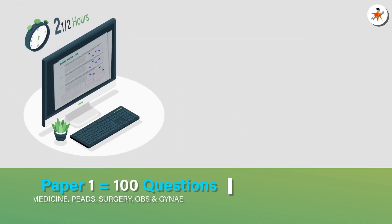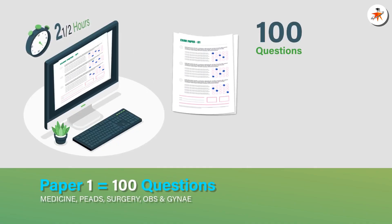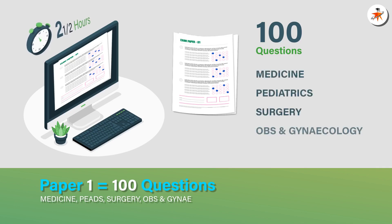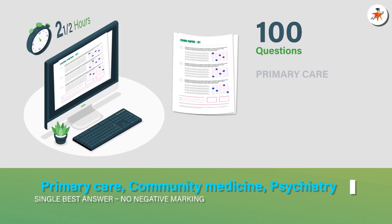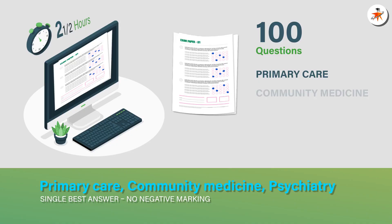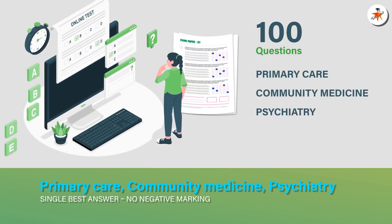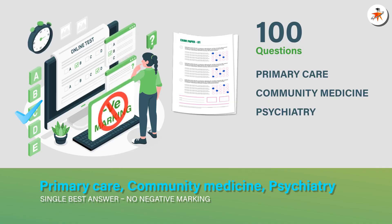Paper 1 has a two and a half hour duration with a total of 100 questions, normally taken from four major disciplines such as medicine, paediatrics, surgery, obstetrics and gynaecology. There may be questions related to primary care, community medicine and psychiatry also. Each question contains five answer choices with a single correct answer, and there is no negative marking.